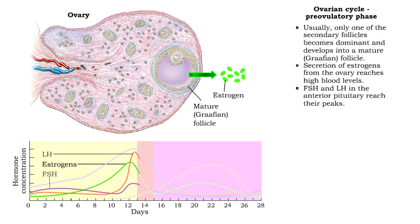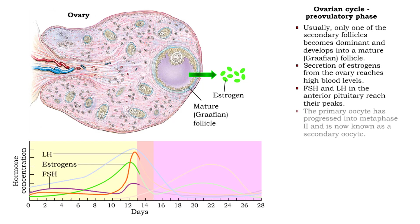Luteinizing and follicle-stimulating hormones reach their peak. The primary oocyte has progressed through meiosis I and has begun meiosis II, stopping at metaphase II. It is now known as a secondary oocyte.